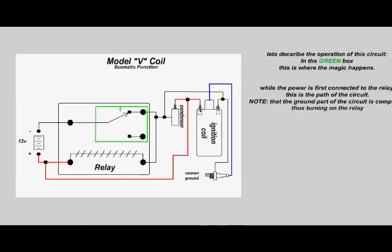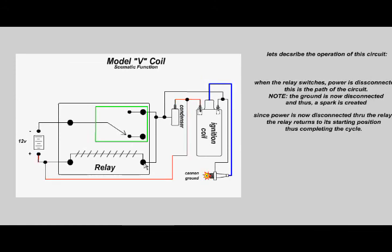In this highlighted green area of the relay, this is where the magic happens. When no power is hooked up to the relay, the ground circuit is completed and then it turns on the relay. Once the relay is turned on, notice that the circuit for the ground is now disconnected from everything, which breaks the circuit.